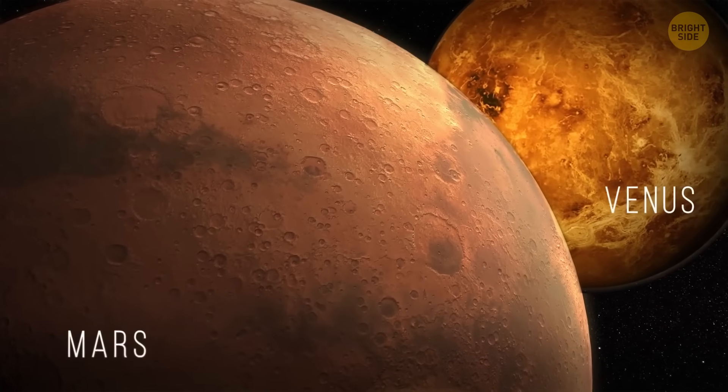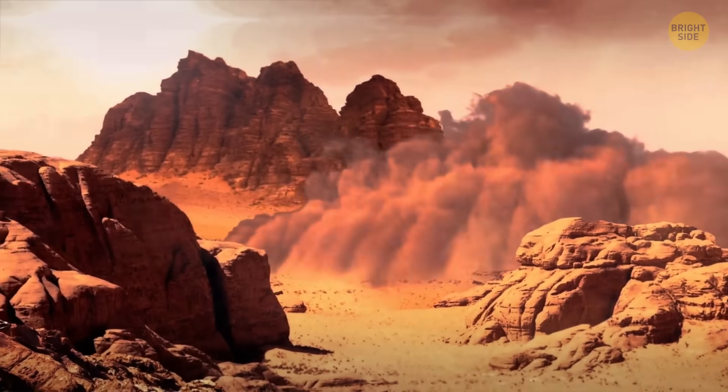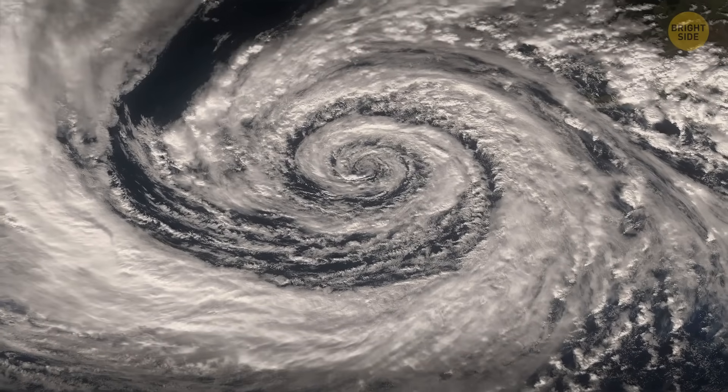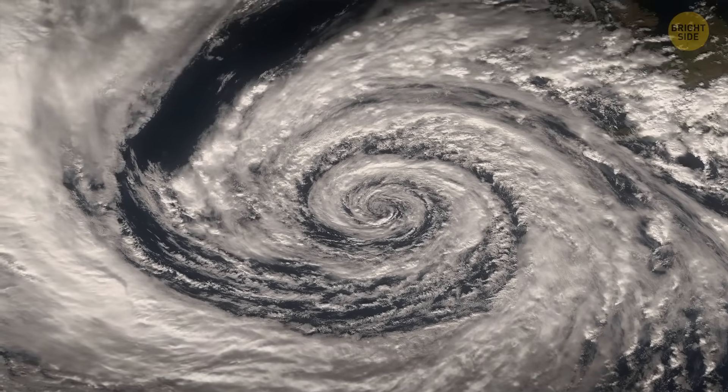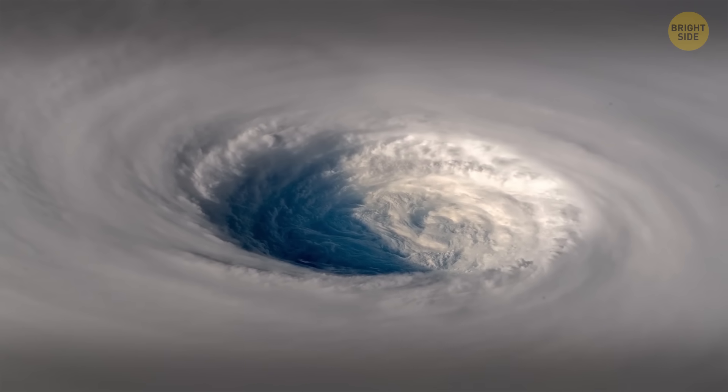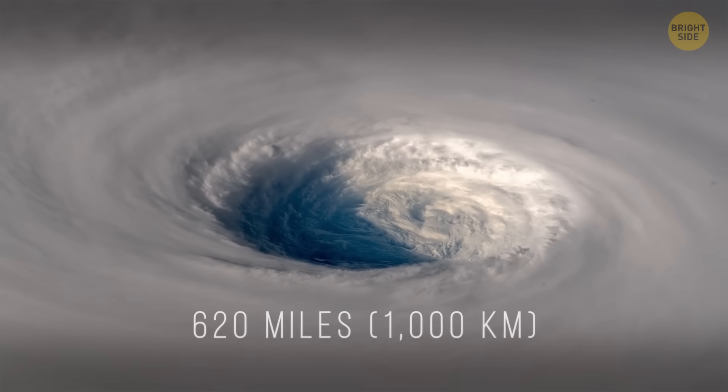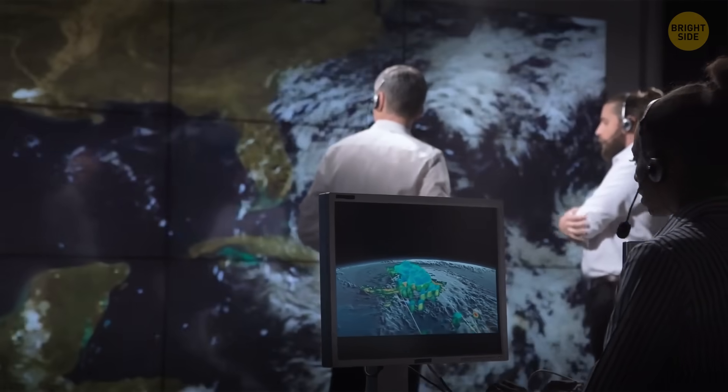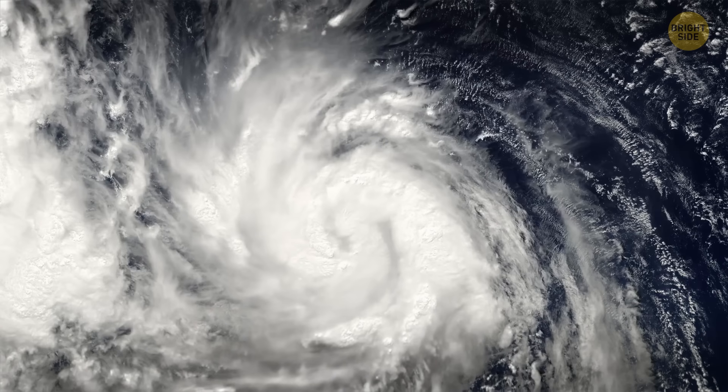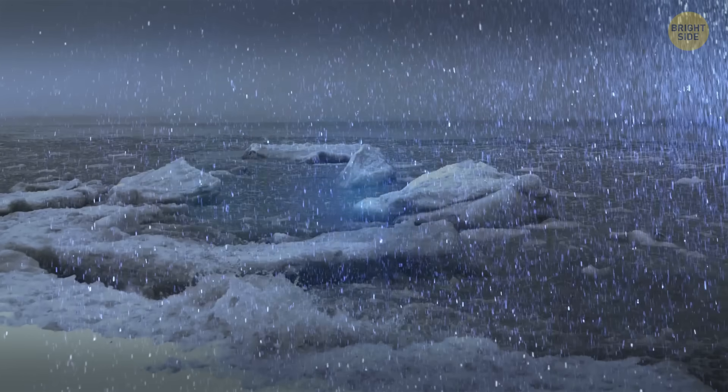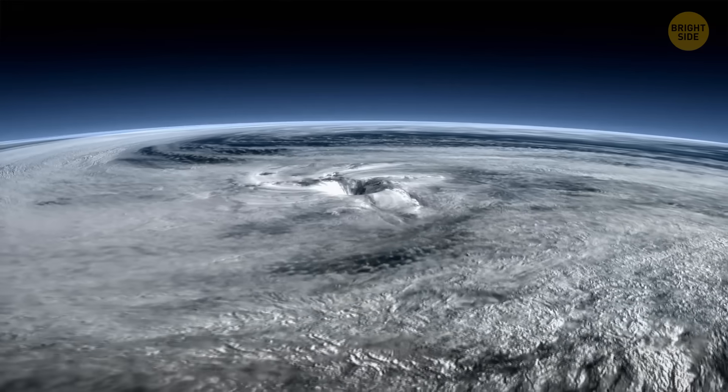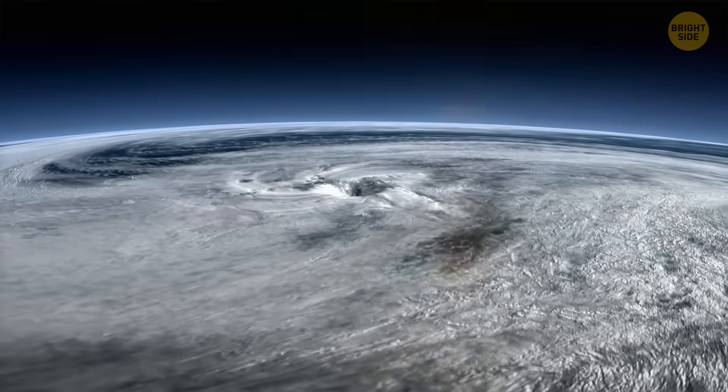Some planets, like Mars and Venus, have pretty intense weather with powerful storms. And now, an equally strong space hurricane might have come to Earth. It was a swirling mass of air, about 620 miles wide. Satellites spotted the hurricane hundreds of miles above the North Pole, somewhere in the Earth's upper atmosphere. The hurricane was raining, not water, but electrons. It lasted almost 8 hours before it finally broke down. It was spinning in a counterclockwise direction.